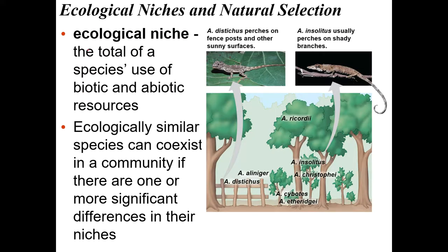We need to define the ecological niche. The niche is the total of the species' use of biotic and abiotic resources — what that really means is the job of the organism. It's not just where it lives, it's what it does: what you eat, when you're awake, do you live in a tree or on the ground. Here are two different lizards — one lives lower and the other lives higher. They eat very similar organisms, but because one lives a little higher and one a little lower, they can occupy the same general area.